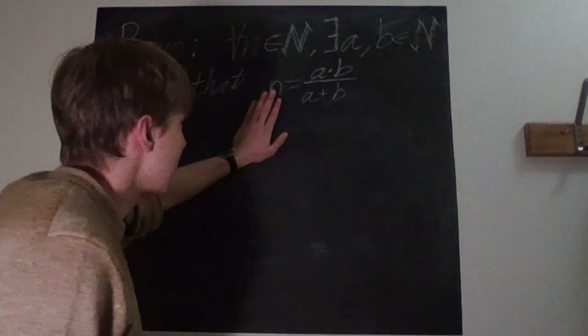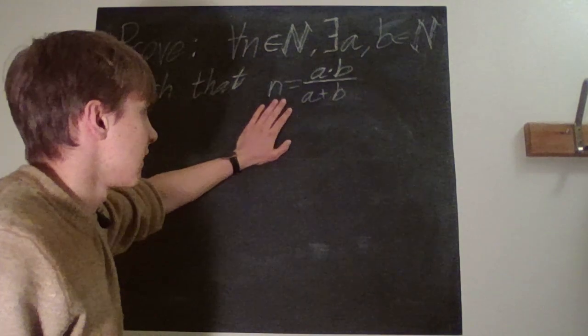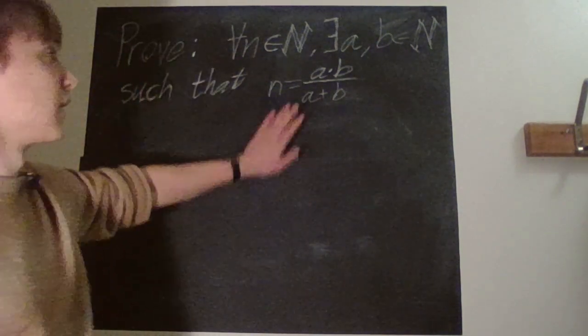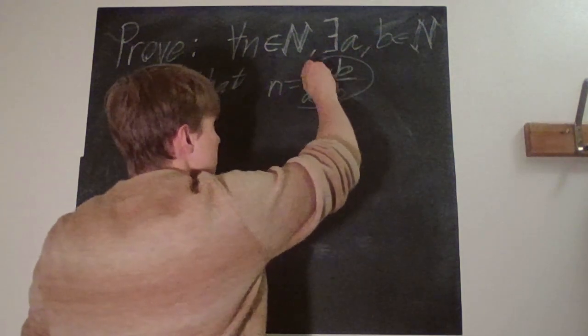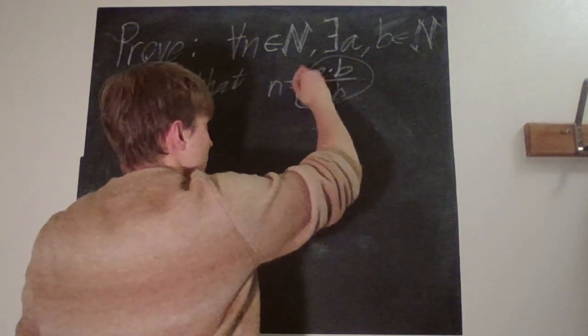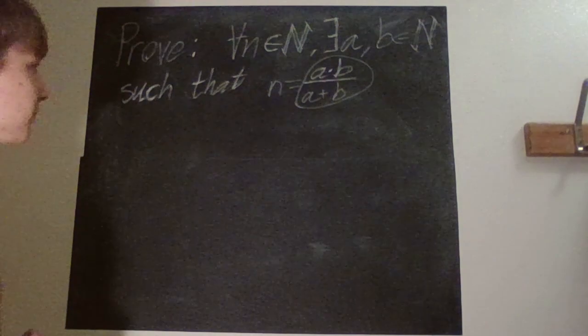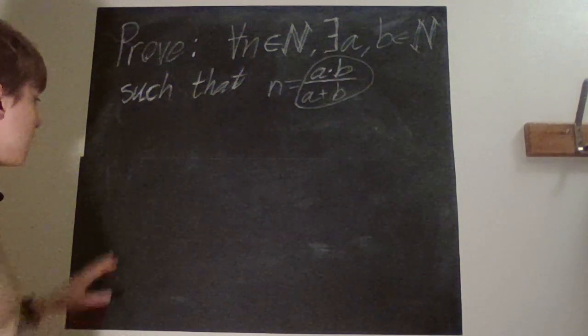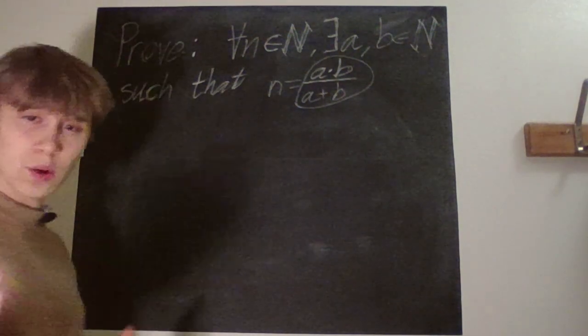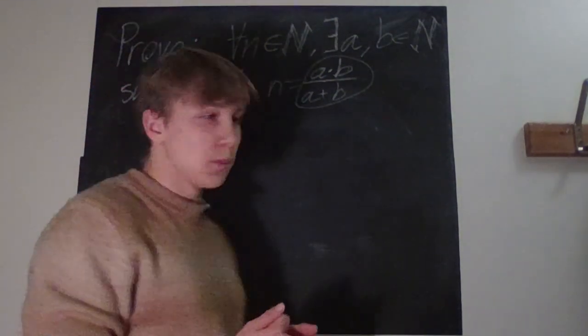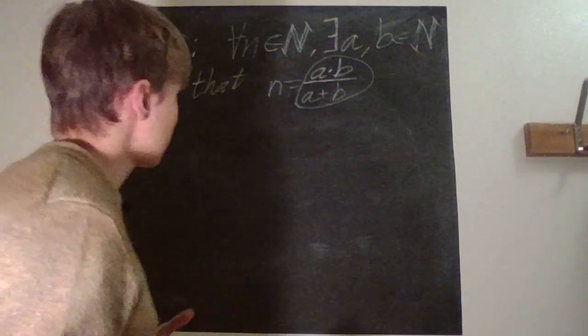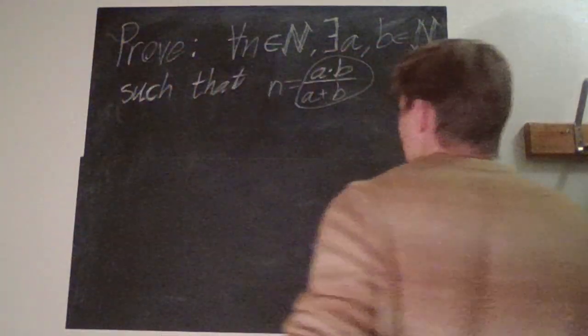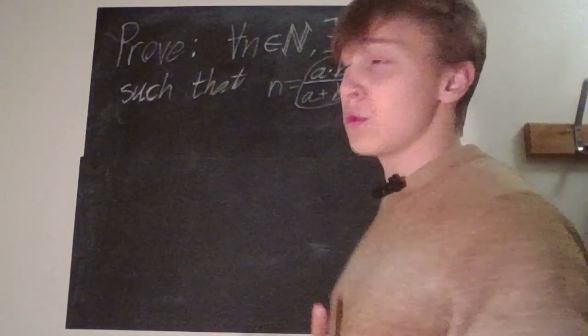In common language, what this means is that we can represent every possible positive integer n with this formula if we only choose positive arguments or inputs. So how should we go about this?